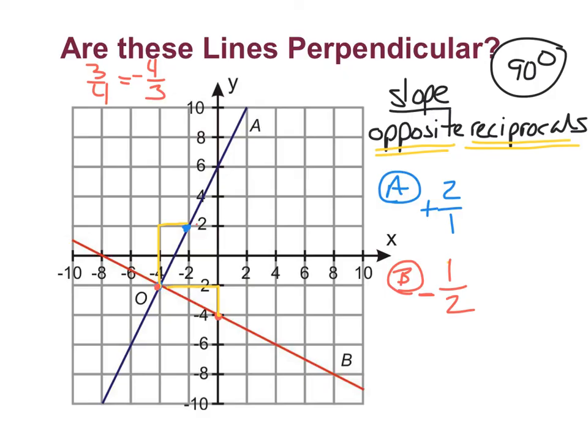So now let's look and ensure that these are perpendicular. Are these opposite slopes? Yes, I have one positive slope and one negative. Are they reciprocals? Yes, the reciprocal of 2 over 1 would be 1 over 2. So are these two lines perpendicular? Yes, they are perpendicular.